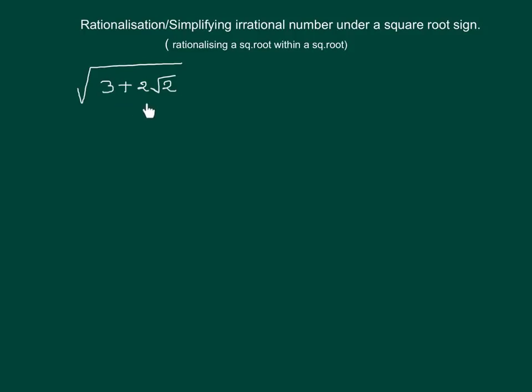To solve such a question, keep in mind √(a²) = a. So now we will try to convert 3 + 2√2 into a whole square.